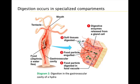The simplest of all digestive compartments are food vacuoles within a cell. Most animals, however, use other specialized compartments to break down larger foods. A gastrovascular cavity is a digestive compartment with a single opening, which is the mouth.